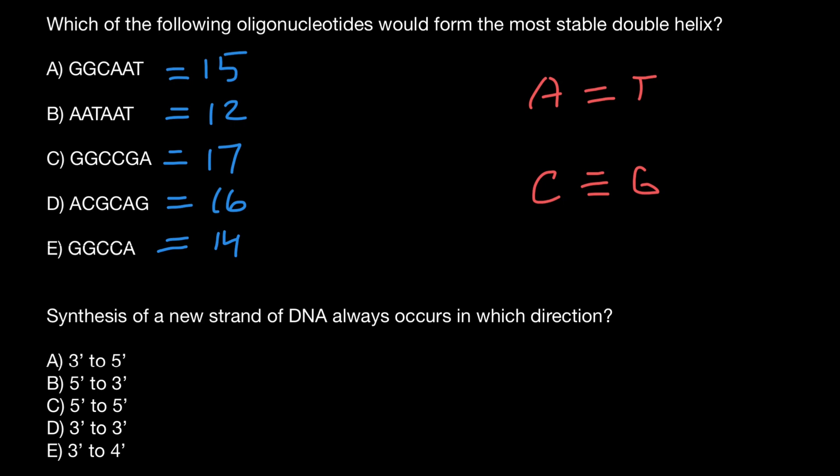The correct answer would be answer C. Variant C gives us the most number of hydrogen bonds, and the more hydrogen bonds there are between the two strands of the DNA, the more stable such a molecule is going to be.